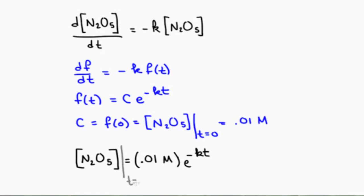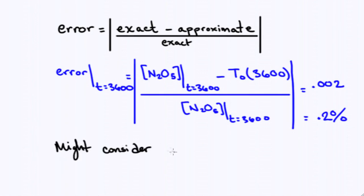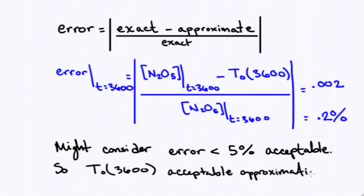Evaluating this expression at time t=3600, we find that the exact concentration is also 0.0094 molar to two significant figures. To be more precise, we can look at the error, which is the absolute value of the exact solution minus the approximate solution, all divided by the value of the exact solution. The error at time t=3600 seconds is 0.002 or 0.2%. This is really quite good. Generally speaking, we might consider an error of less than 5% to be acceptable. So our linear approximation was definitely within the acceptable range one hour later.